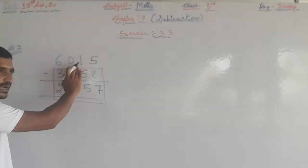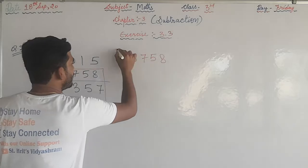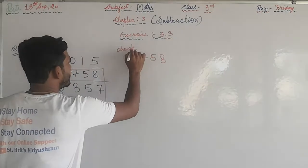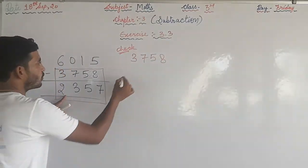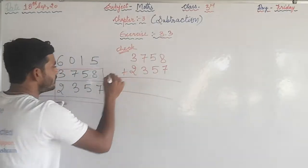If you got this number as answer, then the result obtained by Rasmi is right, otherwise wrong. 3758 and 2357, we are going to check the answer. So add these two numbers.